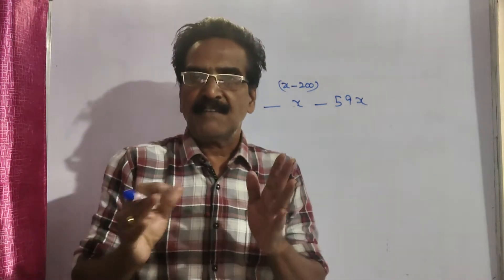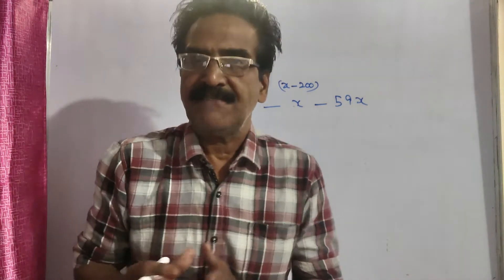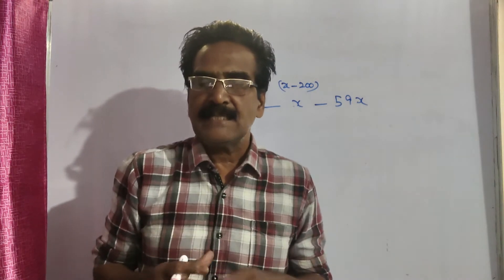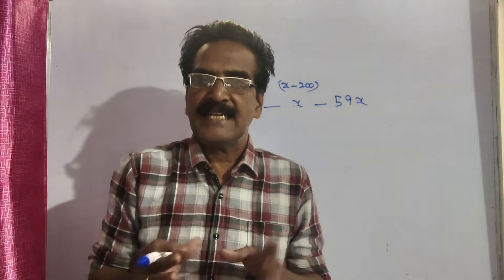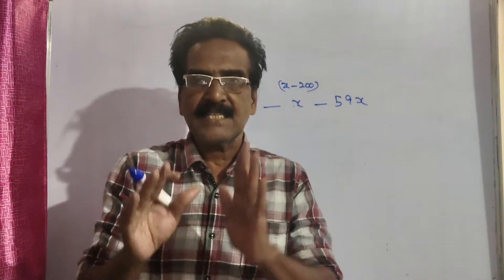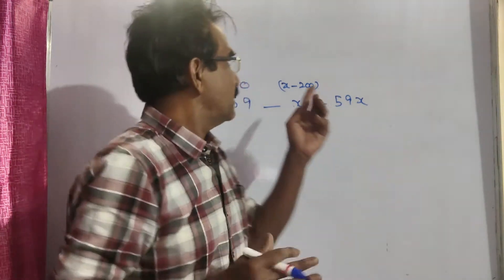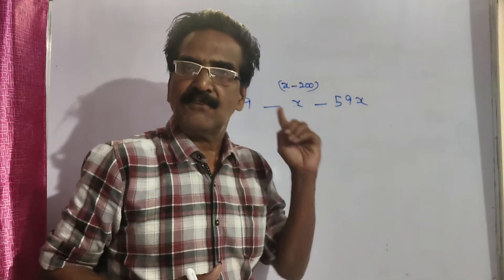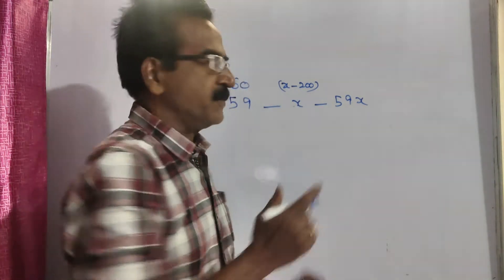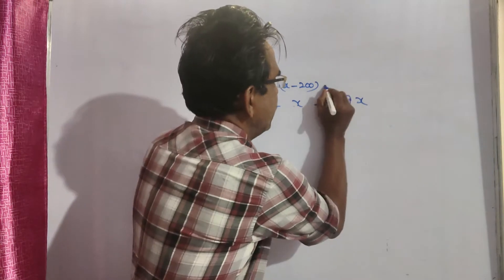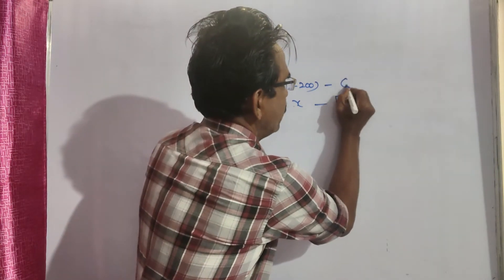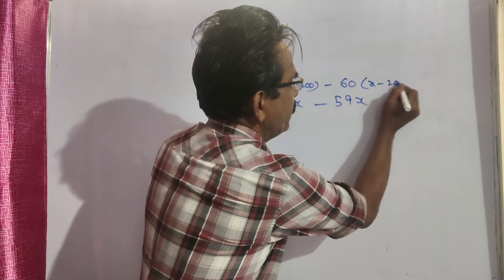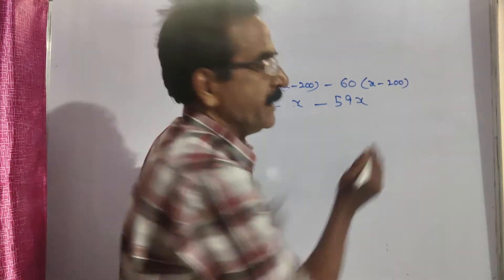Because after one student left, 59 students remain — that means earlier there were 60 students. So x minus 200 is the average of 60 students, and therefore the sum of the 60 students must be 60 times (x minus 200).